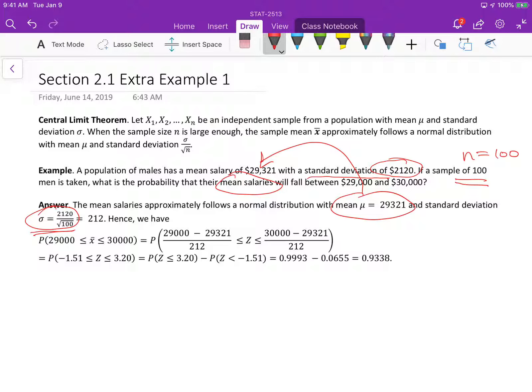So basically this says x bar follows a normal distribution. The mean is 29,321 and the standard deviation is 212. With this information, we will be able to calculate the probability that x bar falls between 29,000 and 30,000.